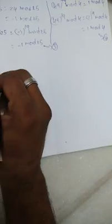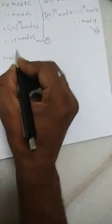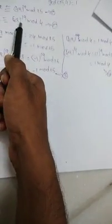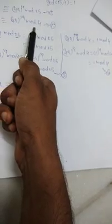We have to solve these two system of equations. The first one is x ≡ 49^19 mod 25, which can be written as x ≡ -1 mod 25. The second one is x ≡ 49^19 mod 4, which can be written as x ≡ 1 mod 4.